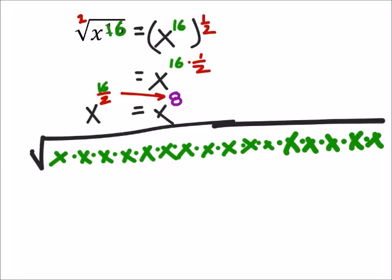So x to the power of 16 is really this stuff, right here, right? Now since the index is 2, it just doesn't show there, we can just find pairs of x's.